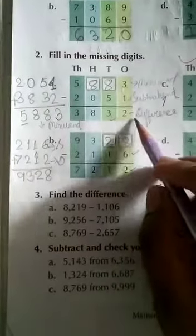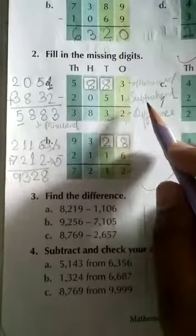Is it clear students? When missing digits are not there, so what you are going to do? We are going to add subtrahend and difference. Then minuend will be there. Is it clear to you students? Thank you.